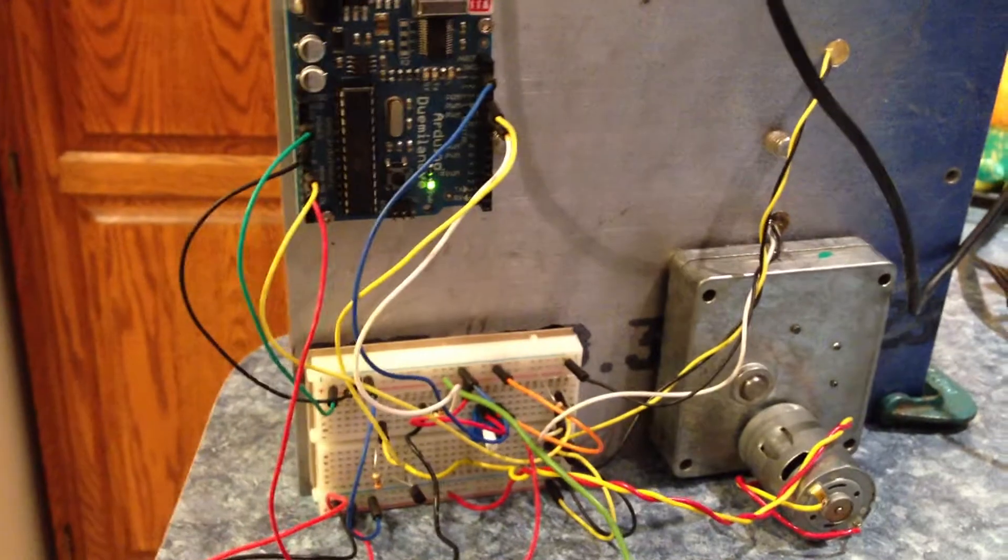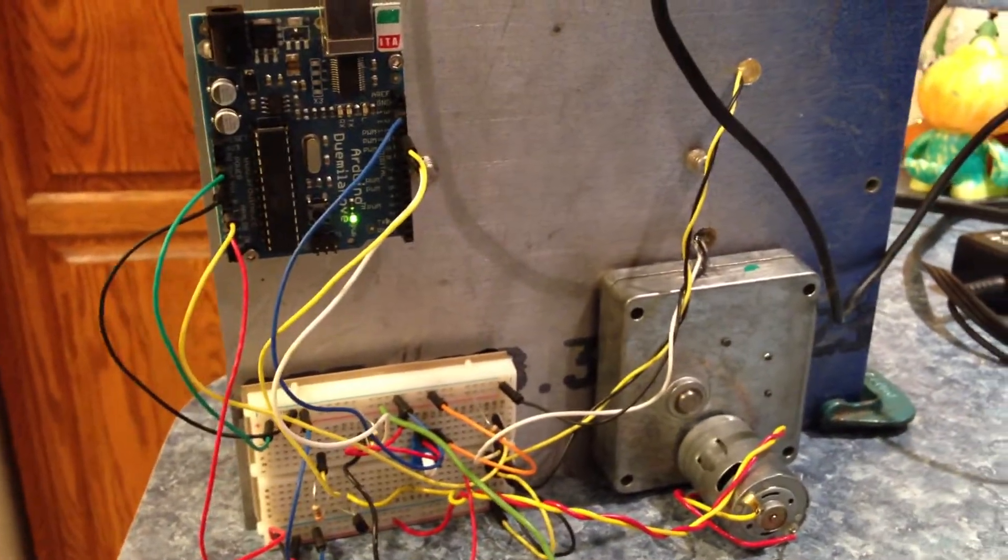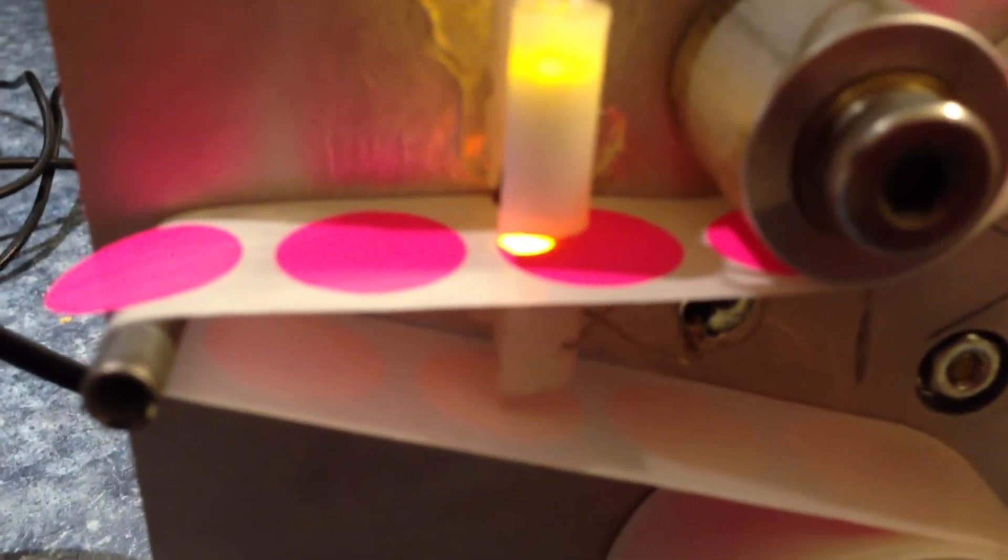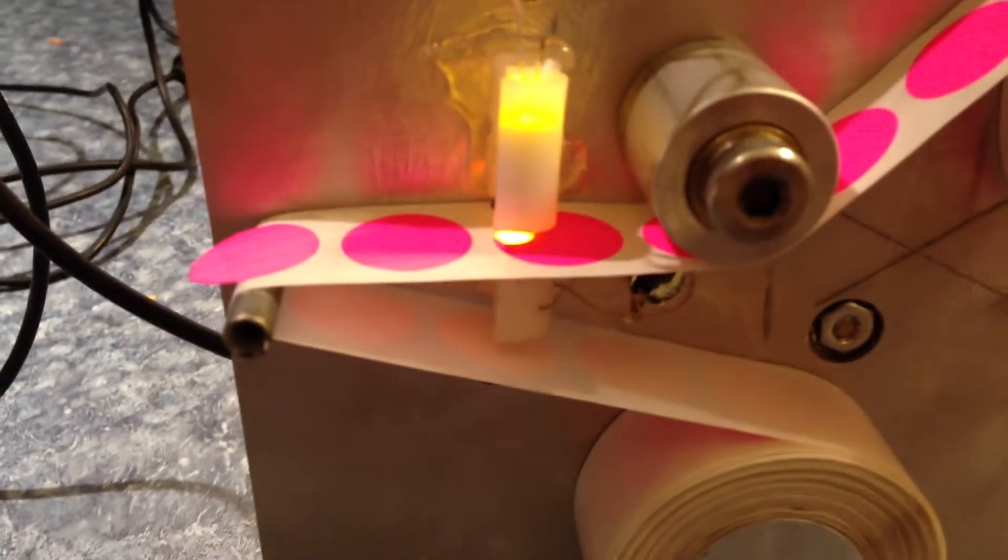The trim pot is used to adjust the set point of what the photoresistor can see as far as the edge goes. It shoots the light through the stickers and the sheet, and it can detect the edge. Once it finds an edge, it's allowed to travel.